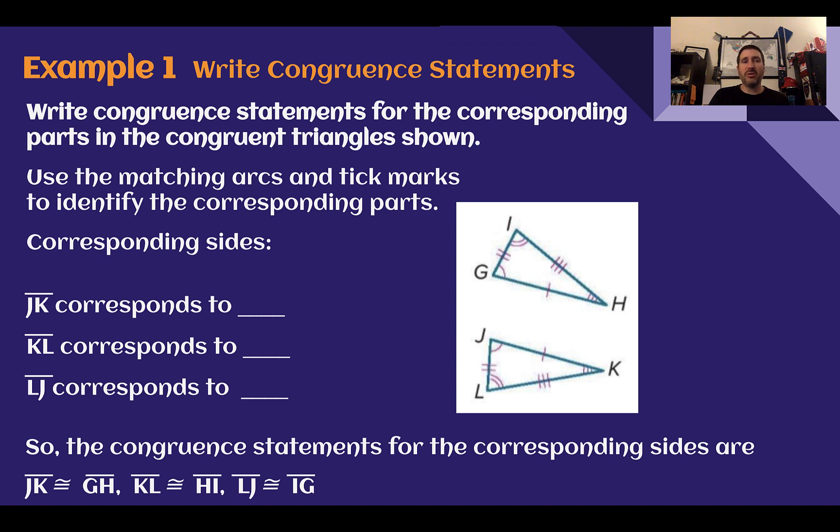So for this, our corresponding sides, we're going to try to match them up. So JK is right here. It has one tick mark. So which does it correspond to? Find the one tick mark. That would be GH. And remember it has a little bar over to show that it is a line segment. KL has three marks. So which one has three marks? That would be HI. And then LJ or JL has two tick marks. That would correspond to IG.